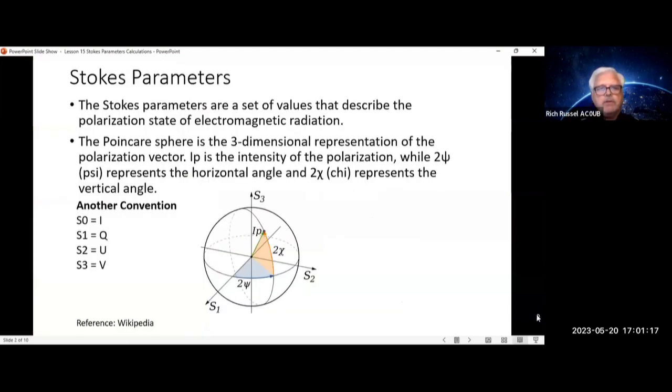Stokes parameters are a set of values that describe the polarization state of electromagnetic radiation. It's characterized by the Poincare sphere, which is a three-dimensional representation of the polarization vector. IP is the intensity of the polarization, while 2-psi represents the horizontal angle and 2-chi represents the vertical angle.